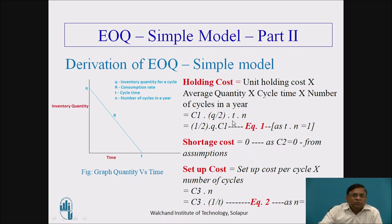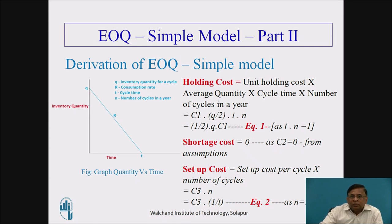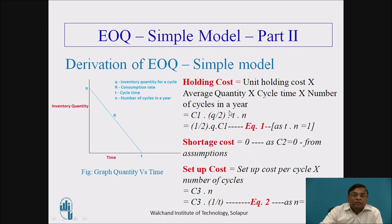Now, coming to the steps in the derivation. We start with holding cost. The total inventory-related cost is the sum of all costs, and to begin with, let us start with holding cost. Holding cost can be taken as unit holding cost multiplied by average quantity, multiplied by cycle time, into number of cycles in a year. Symbolically, unit holding cost is represented by C1, which is rupees per unit item per unit time.